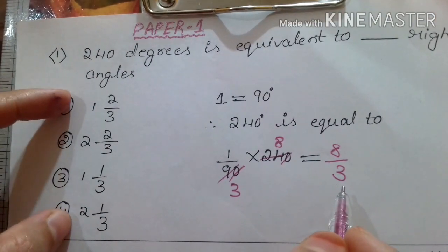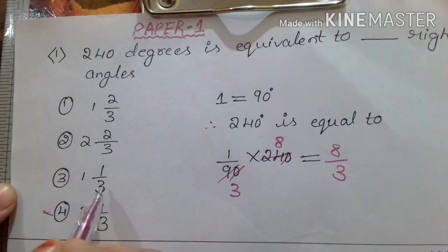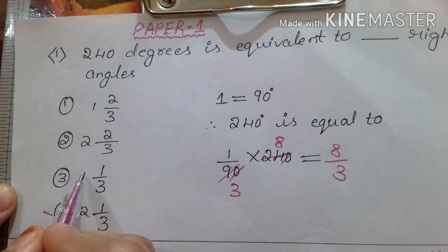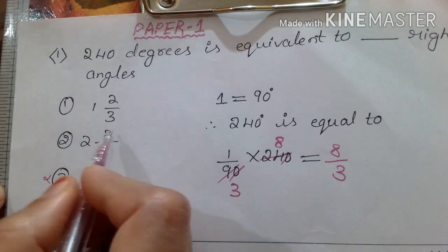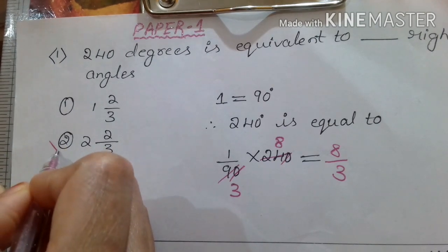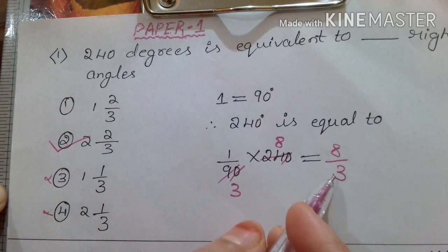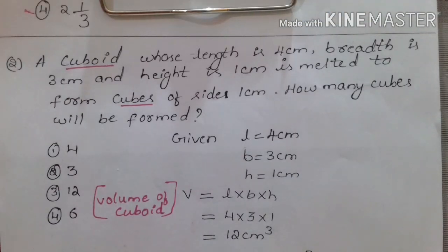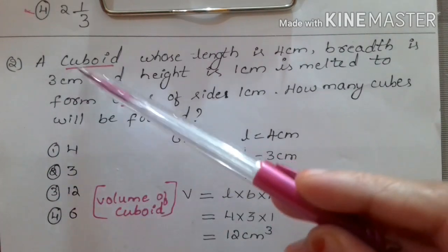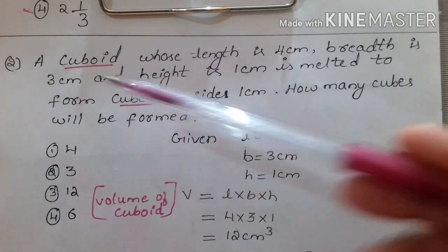In the options they have given the answer in mixed form. Let us check: three twos are six, six plus one is seven — 7/3, not the answer. Three ones are three, three plus one is four — 4/3, not the answer. Three twos are six, six plus two is eight — 8/3. So option number two, 2⅔, is nothing but 8/3, which is the answer.